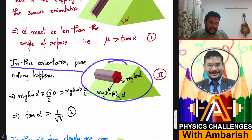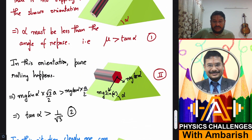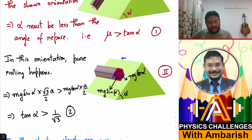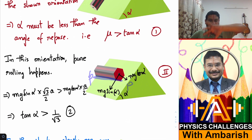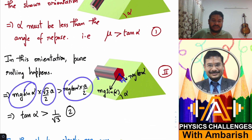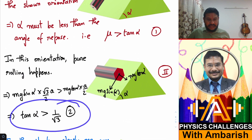In the second orientation, pure rolling is happening. The free body diagram has mg acting downward with component mg sin alpha along the slope and mg cos alpha perpendicular. For rolling, the torque of mg sin alpha about the tipping edge PP' must exceed that of mg cos alpha. The perpendicular distances are a√3/2 and a/2 respectively, giving mg sin alpha × (√3/2)a > mg cos alpha × (a/2), which simplifies to tan alpha > 1/√3.